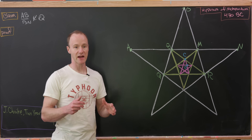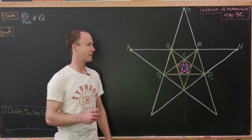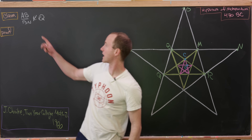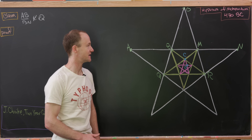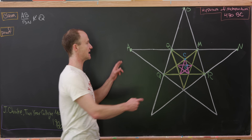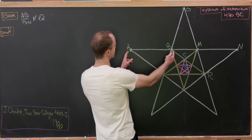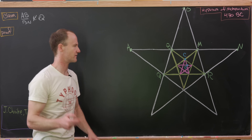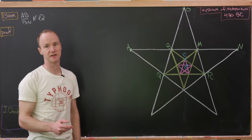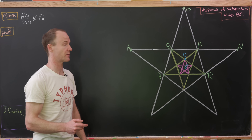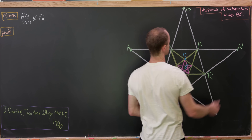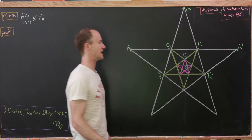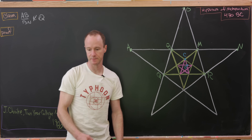The irrational quantity we'll arrive at is the ratio of length AB to length BN. AB is the length of one of the arms of the pentagram, and BN is the remaining part of that line segment.